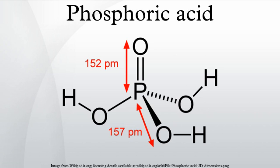The dominant use of phosphoric acid is for fertilizers, consuming approximately 90% of production. Food grade phosphoric acid is used to acidify foods and beverages such as various colas, providing a tangy and sour taste. Various salts of phosphoric acid, such as monocalcium phosphate, are used as leavening agents.